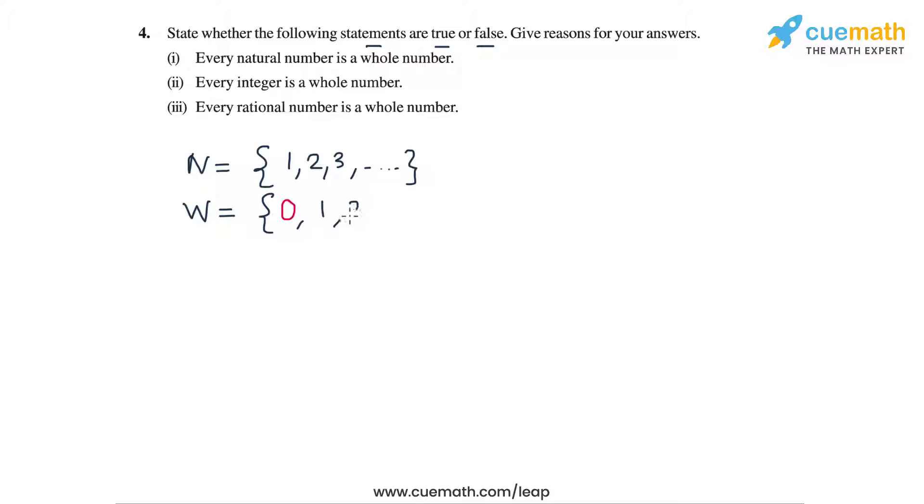So the set of whole numbers is 0, 1, 2, 3, and so on. So clearly every natural number also occurs in the set of whole numbers. So every natural number is a whole number. So the first statement is true.